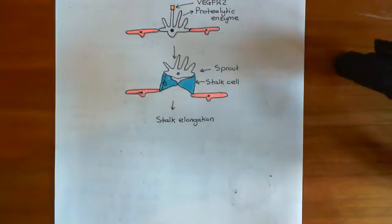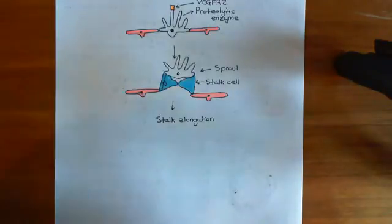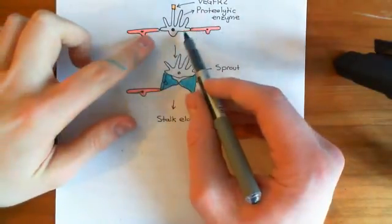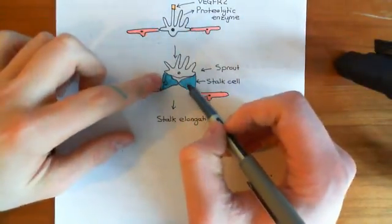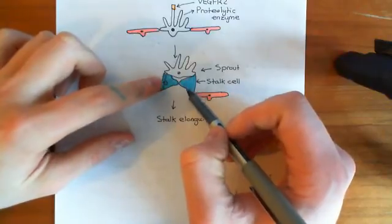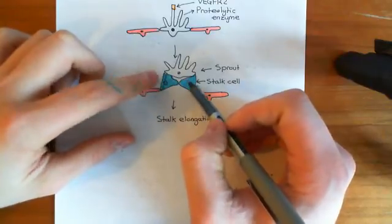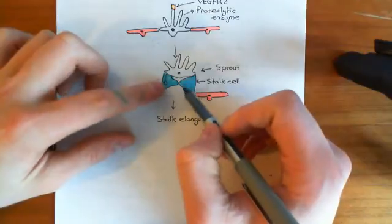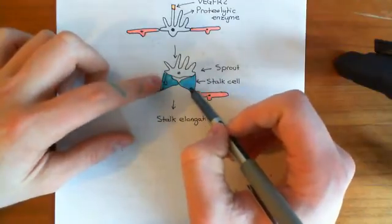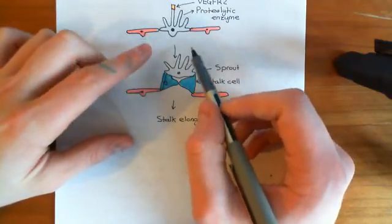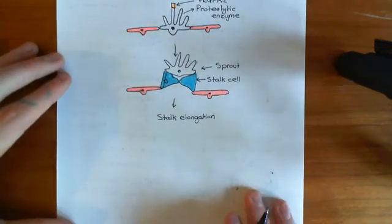Meanwhile, the endothelial cells that have been left behind will proliferate to produce cells which will fill in the gap. What you'll gradually get then is a stalk being formed, and once you've produced these original stalk cells, those will proliferate to produce more as the tip cell moves further and further.